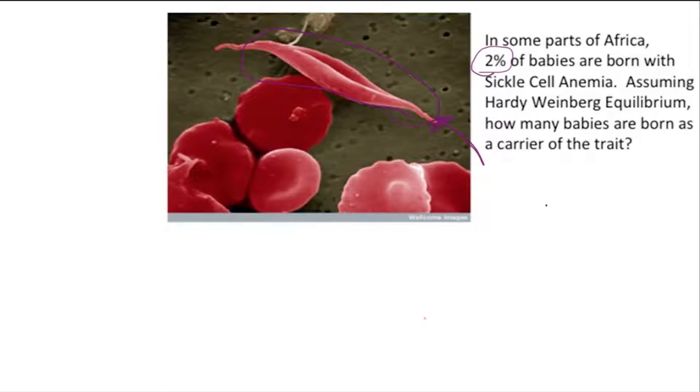So assuming Hardy-Weinberg equilibrium is true in the population, how many babies are born as a carrier of the trait? In this problem, we're assuming that this population is in Hardy-Weinberg equilibrium, meaning that equation is going to hold true. We're going to use the letter H to represent the alleles for this particular disorder.